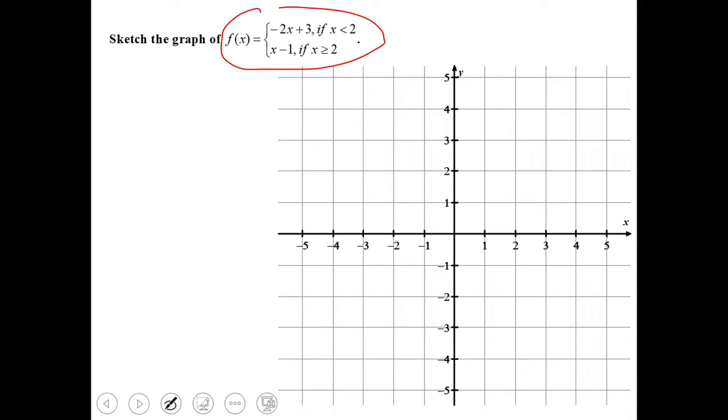It tells us that the function behaves like negative 2x plus 3 when x is less than 2, and like x minus 1 when x is greater than or equal to 2. What I usually do on these types of problems is create a table.